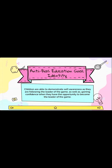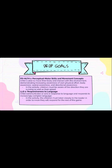This activity reflects the first anti-bias education goal of identity, as the activity demonstrates self-awareness as the children are listening to the directions of the leader and controlling their body movement, as well as instilling confidence when the child has the opportunity to become the leader. The two DRDP goals I chose to focus on for this activity were perceptual motor skills and movement concepts, as well as responsiveness to language.